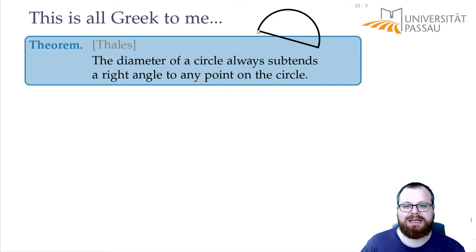If we have any segment and we take the circle around the endpoints, then whatever point on the circle we take, we always get a right angle if we connect it to the two endpoints. Here we have a right angle, and here also.